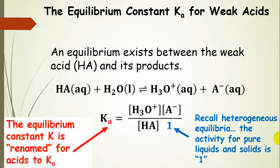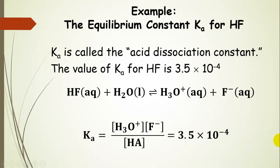What we're going to do now is simply rename this equilibrium constant. It just has a new name — it's Ka. Ka is called the acid dissociation constant; we often just say Ka. An example value for hydrofluoric acid is 3.5 times 10 to the negative 4. These are usually pretty small. Just like we did before, we can write the equilibrium constant expression and plug in the value for Ka.